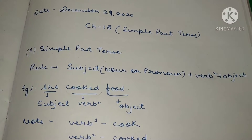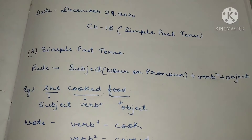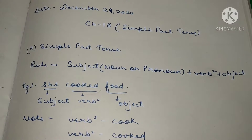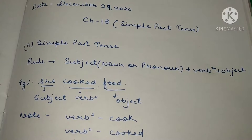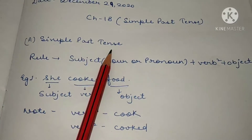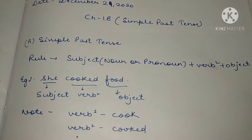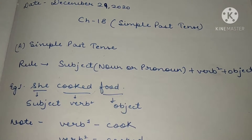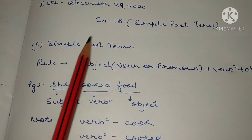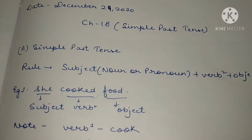Today I am going to start a new chapter, that is Chapter 18: Simple Past Tense. I have discussed Simple Present Tense and Present Continuous Tense — all the rules were discussed. Now today I am going to start a new topic, that is Simple Past Tense. In this topic also there is a rule, just as we have learned in Simple Present Tense and Present Continuous Tense.